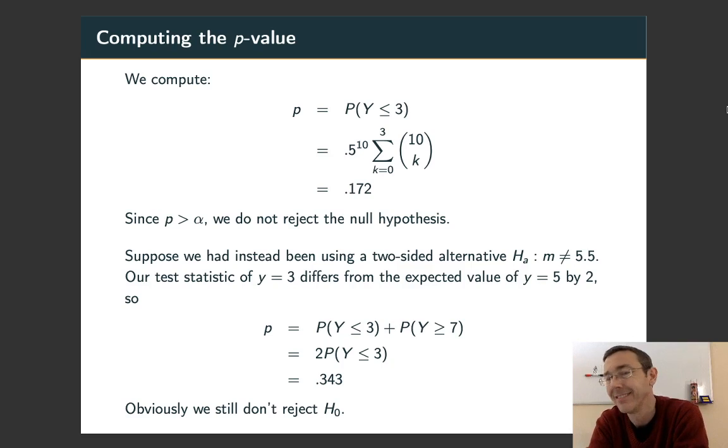So that's not a small probability in this context. It's, in particular, larger than the alpha that we set at the beginning of the problem, alpha equals 0.05. And so we cannot reject the null hypothesis. There is insufficient evidence to conclude that the median of the population from which we're sampling is actually less than 5.5.